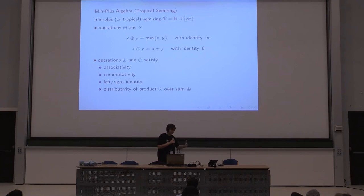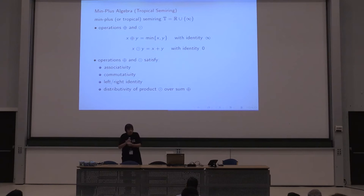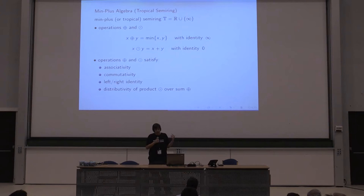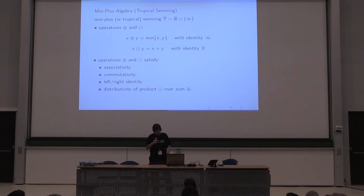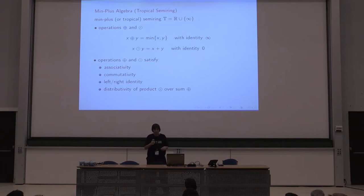Basically, you take the real numbers, complete them with infinity, and instead of the usual addition and multiplication, you use operations that have the minimum as your addition — which has infinity as identity — and the usual addition as multiplication, with zero as identity. This has nice properties: the operations are associative, commutative, you have left and right identities, and the product distributes over the sum. However, it's a semi-ring because you don't have additive inverses, and the addition is idempotent: x plus x is x.